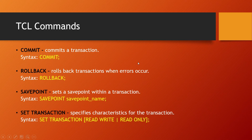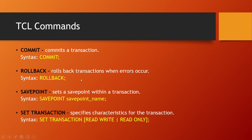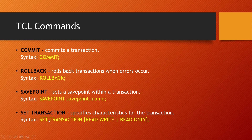TCL commands are: COMMIT — commits a transaction; ROLLBACK — rolls back a transaction when errors occur; SAVEPOINT — sets a save point within a transaction so you can save progress during processing; and SET TRANSACTION — specifies characteristics for the transaction, such as READ WRITE or READ ONLY.